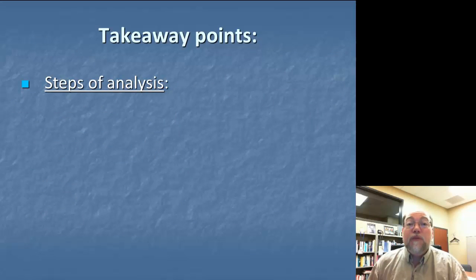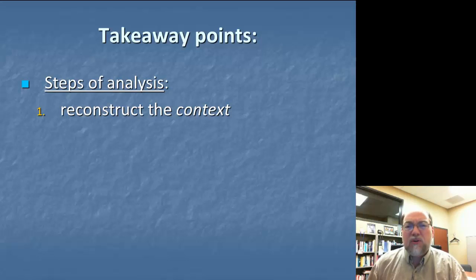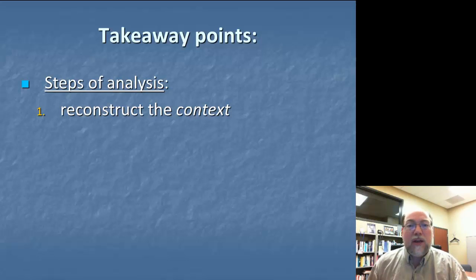In the first lesson of the series, we talked about the first step of neo-Aristotelian criticism, which is reconstructing the context. We talked about how you want to use background research, as well as careful analysis of what you find in that research, to reconstruct what we know about the rhetoric, the occasion of the rhetoric, and the audience that the rhetoric is being directed to.